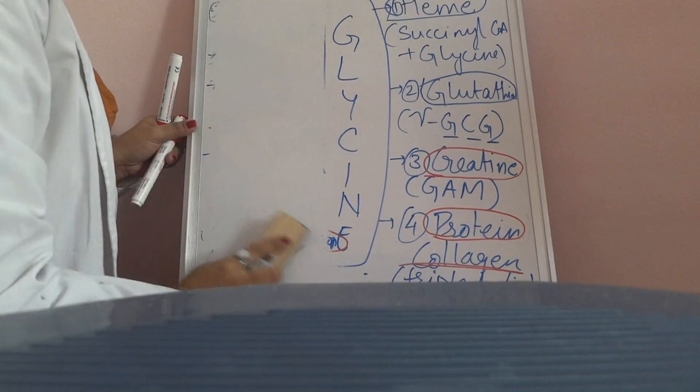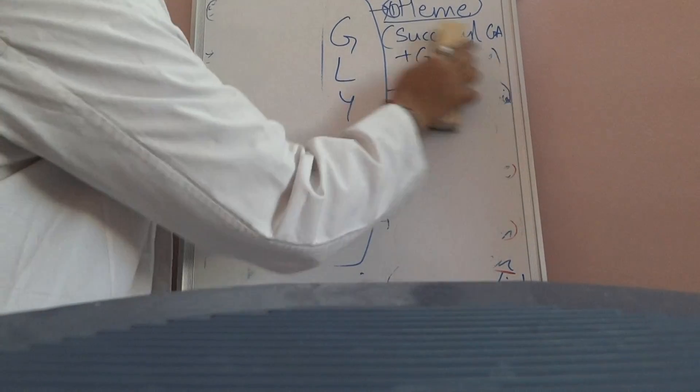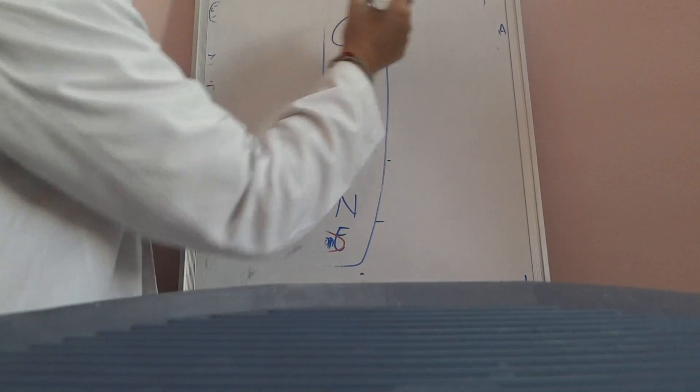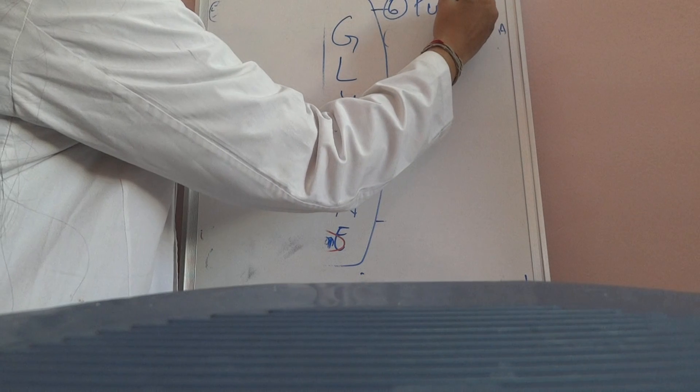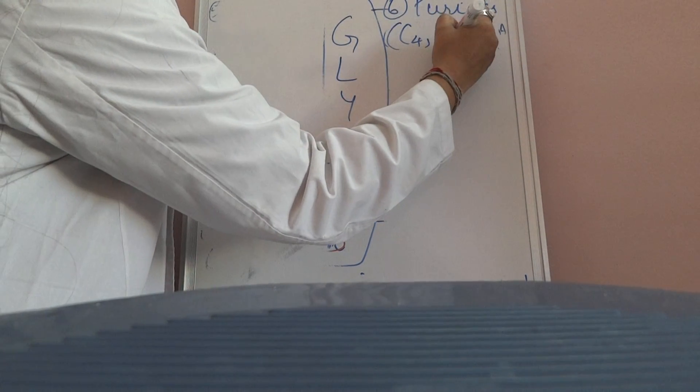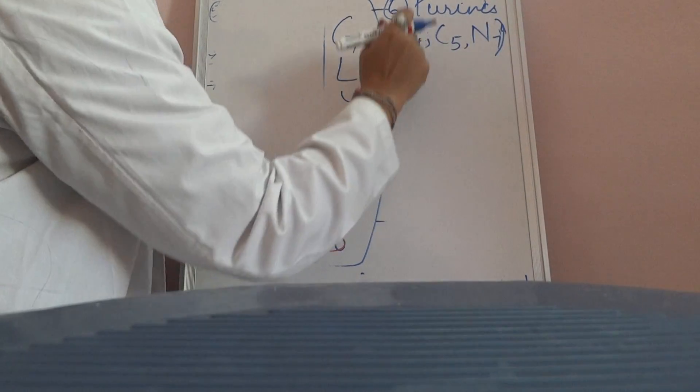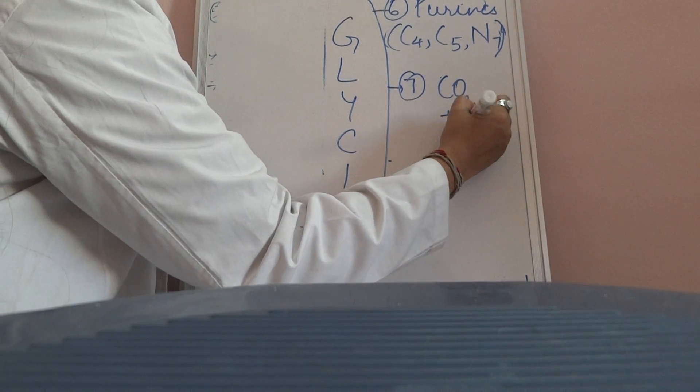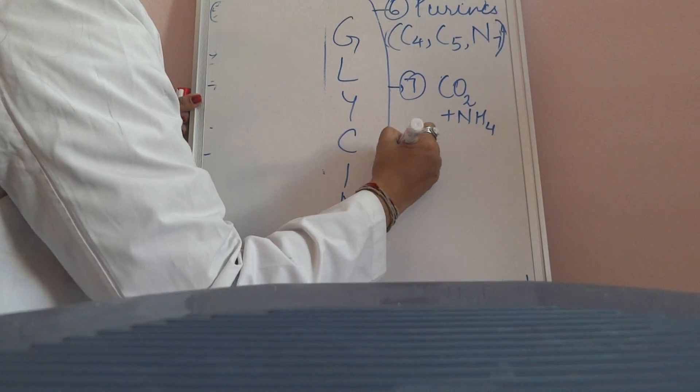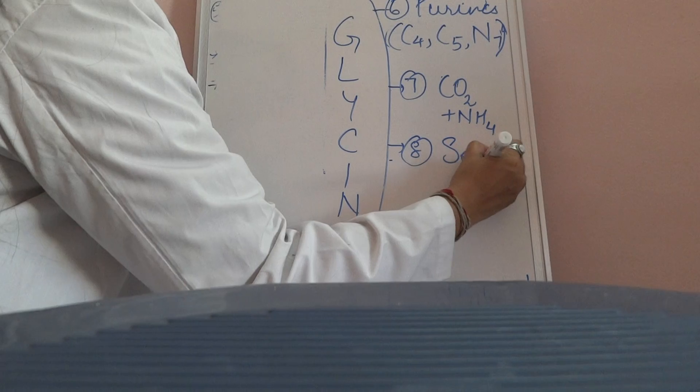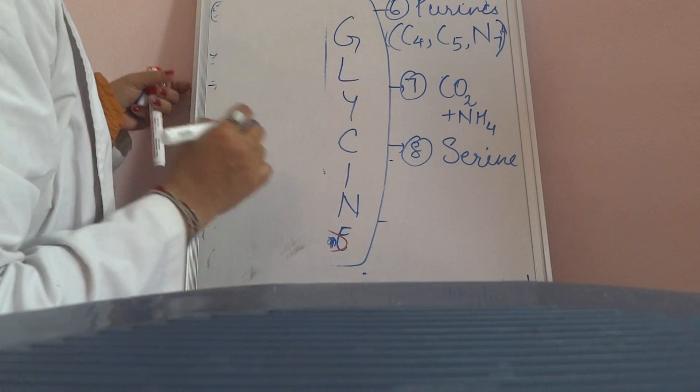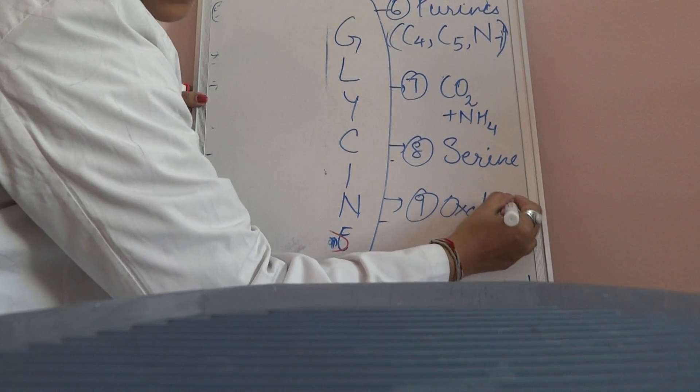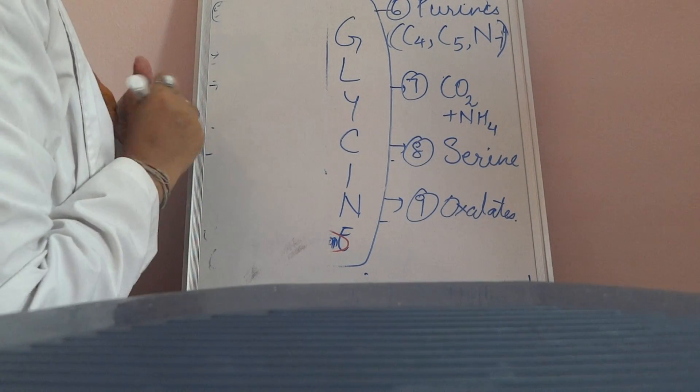Other products that can be formed from glycine are... we have still discussed five important products. The sixth important one is purines. The carbon number C4, C5 and nitrogen N7 of purine is formed from glycine. The seventh important point is that it can form carbon dioxide plus ammonium or ammonia. The eighth important point is that it can form serine. It can form oxalates. So these are the products that are formed from glycine.